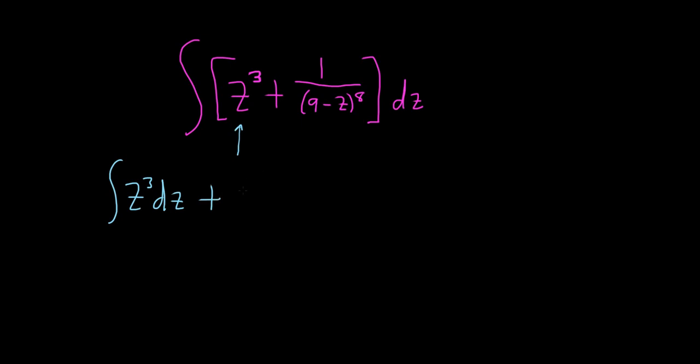and then we'll integrate the other one. And the reason we had to break it up is because this second integral here requires a u substitution because we have 9 minus z to the 8th power, and it's on the bottom. So we have to make a u substitution before we can do this one. This one, the z cubed, is ready to go.